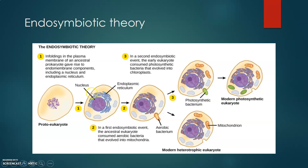It's thought that infoldings or invaginations of the plasma membrane gave rise to the nucleus and the endoplasmic reticulum, which is one organelle we'll talk about when we get to the eukaryotic cell. Then, in one endosymbiotic event, this pre-eukaryote engulfed one of those aerobic bacteria — the ones that could use oxygen for their metabolism. That aerobic bacterium started to provide energy to the pre-eukaryote, which needed some information from the nucleus to survive, and this pre-eukaryotic cell started to depend on the energy generated by the aerobic bacterium.